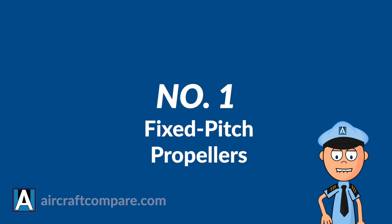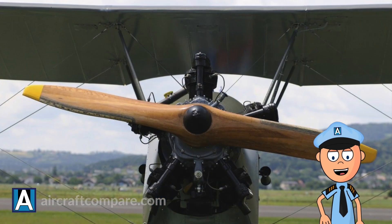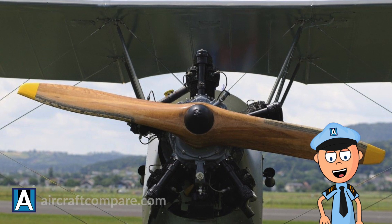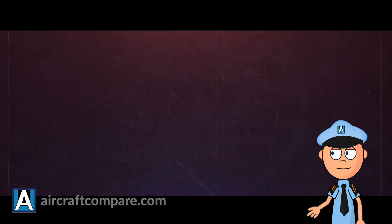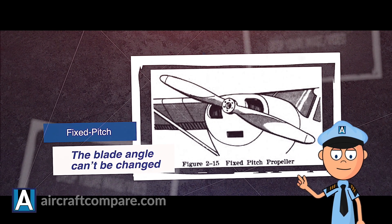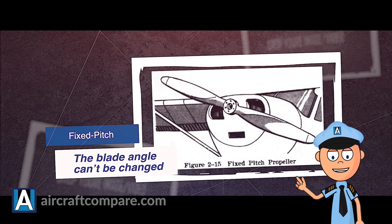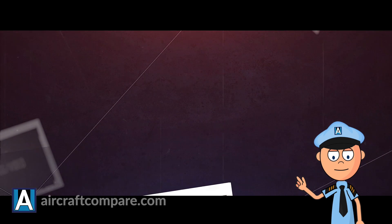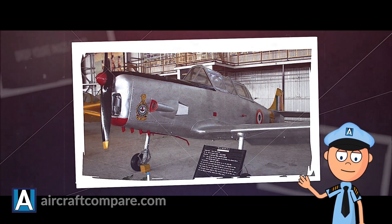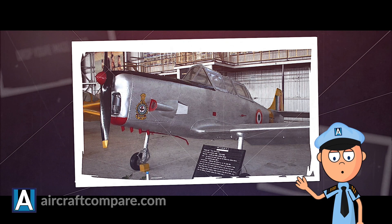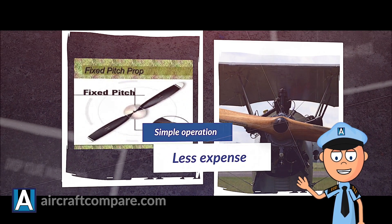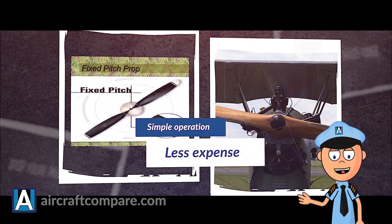Number 1: Fixed Pitch Propeller. The propeller that has the blade angle or blade pitch made into the propeller is categorized as a fixed-pitch propeller. Once the propeller has been built, the blade angle can't be changed. Fixed-pitch propellers are generally one-piece and made of aluminum alloy or wood. They fit a specific set of conditions of both engine and airplane speed. Any change in those conditions reduces both the propeller and engine efficiency. The advantages they offer include simple operation and less expense.